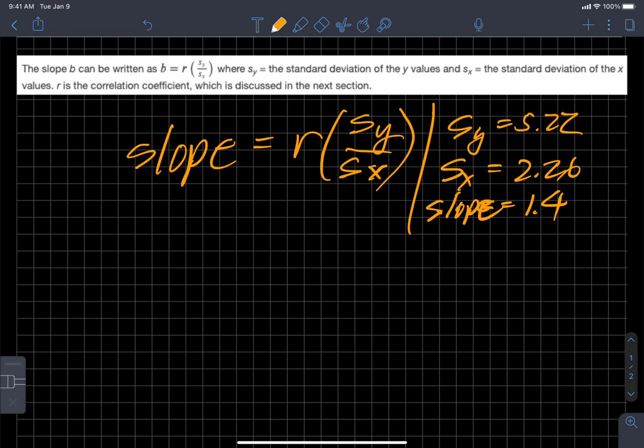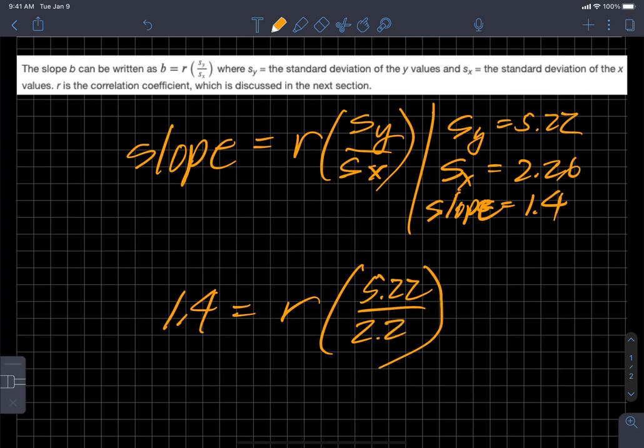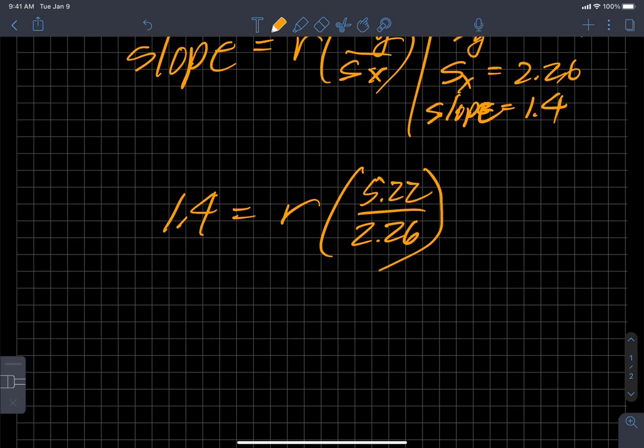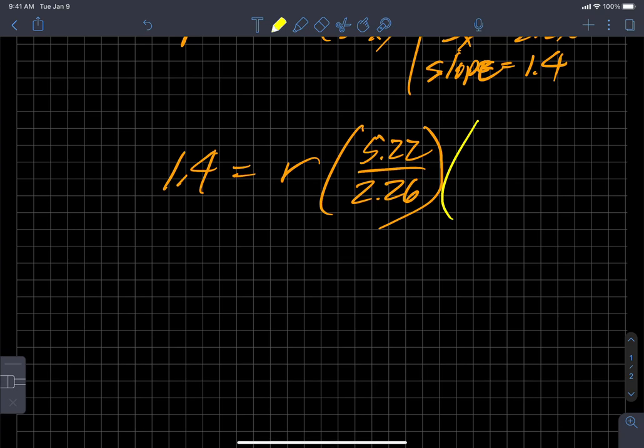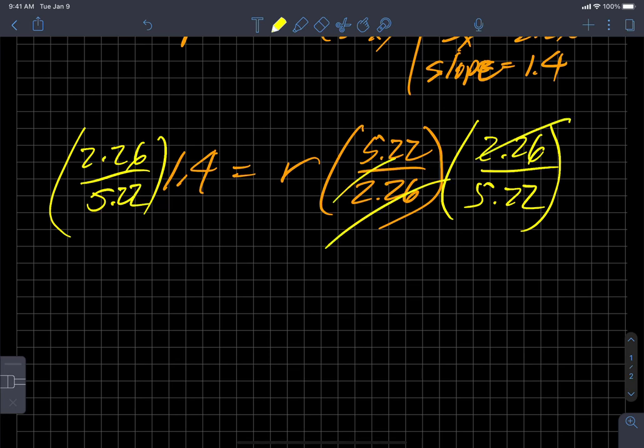We're going to substitute 1.4 in for slope. R is what we're looking for as an intermediate step. S of y is 5.22 and s of x, the standard deviation of the x values, is 2.26. So I'm just going to multiply by the inverse or reciprocal, however you want to think about it: 2.26 over 5.22. That becomes 1. I get r equals 1.4 times 2.26 divided by 5.22.